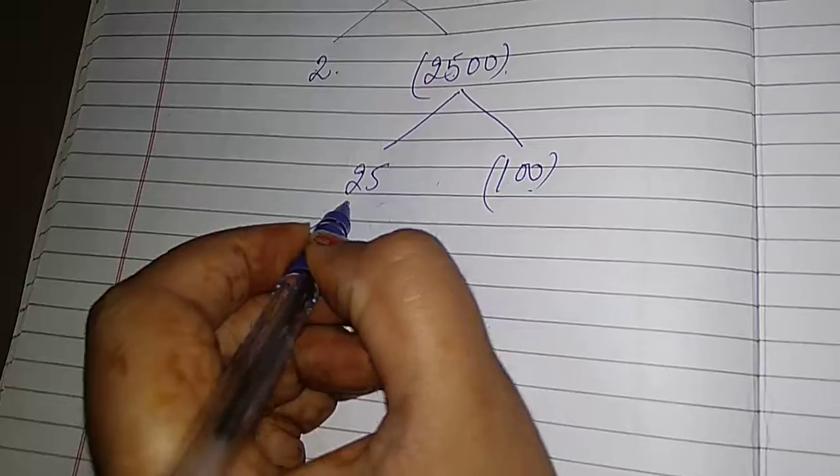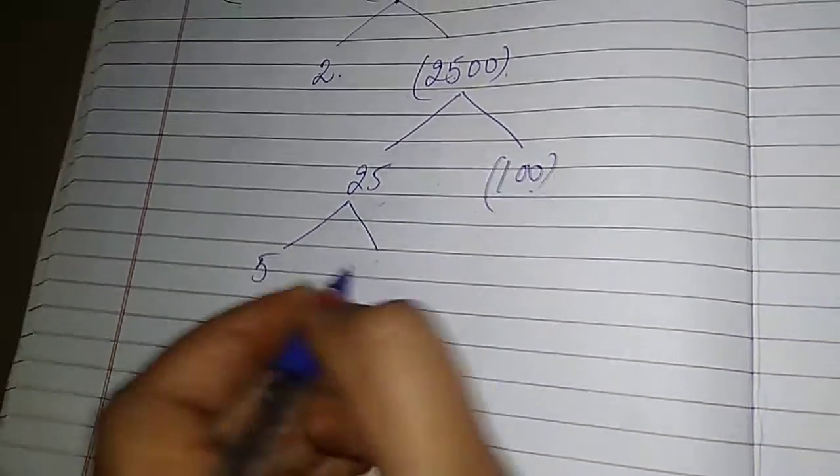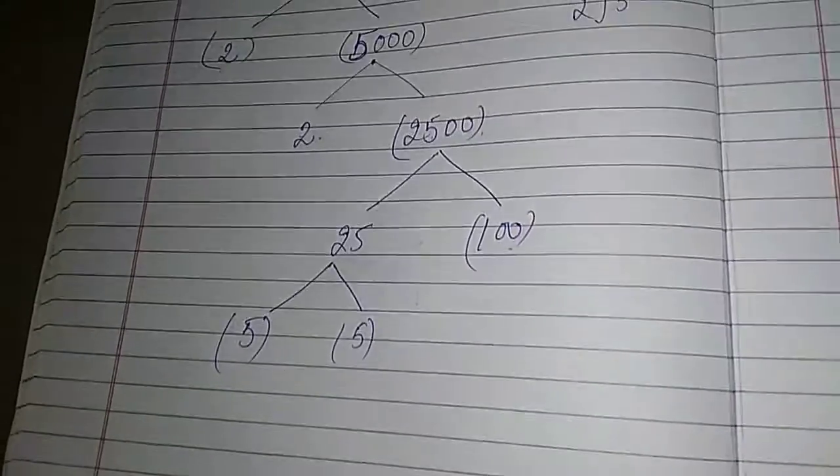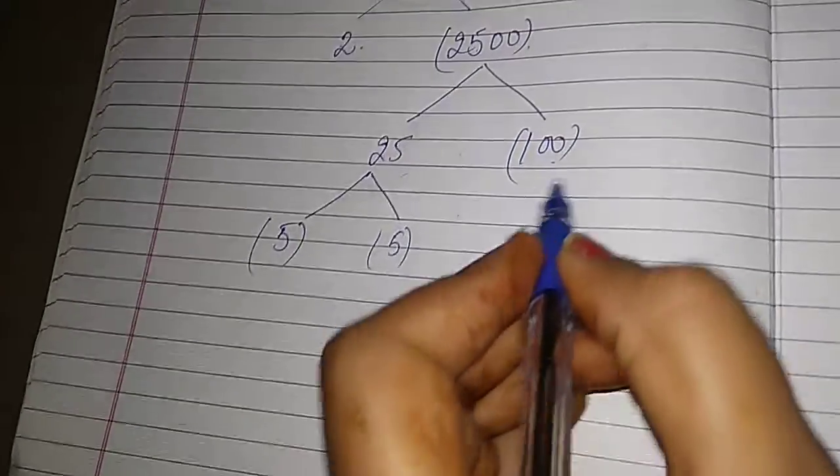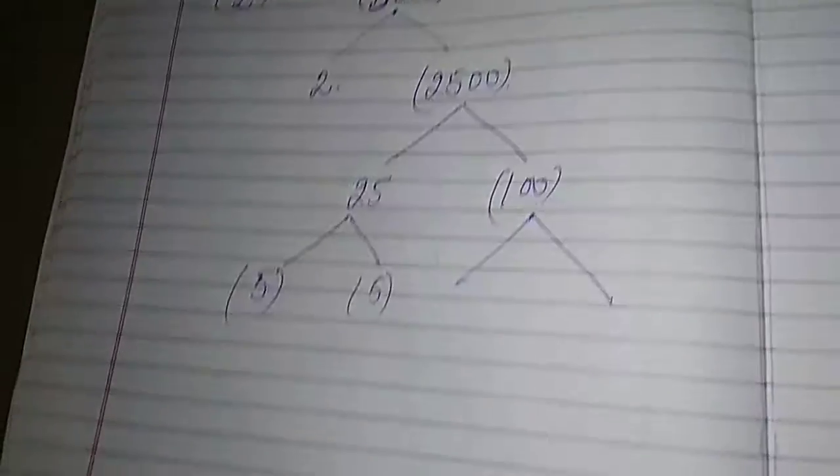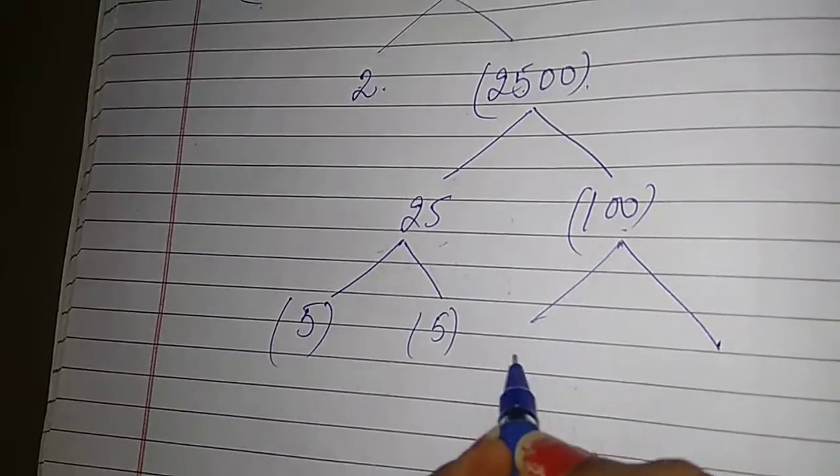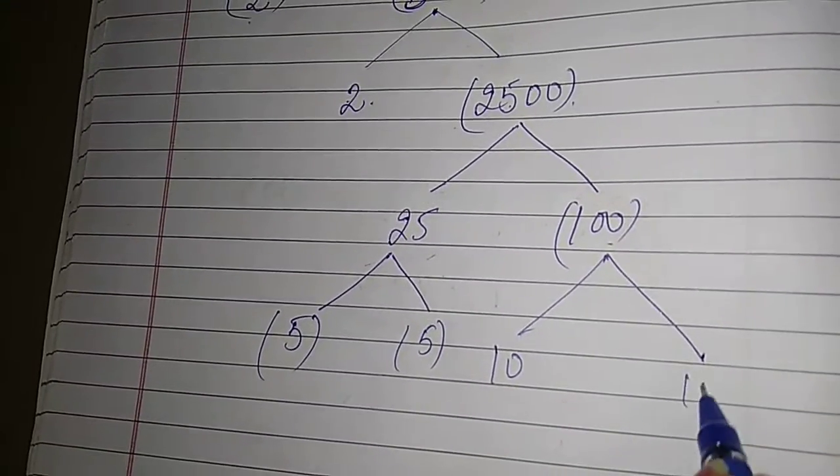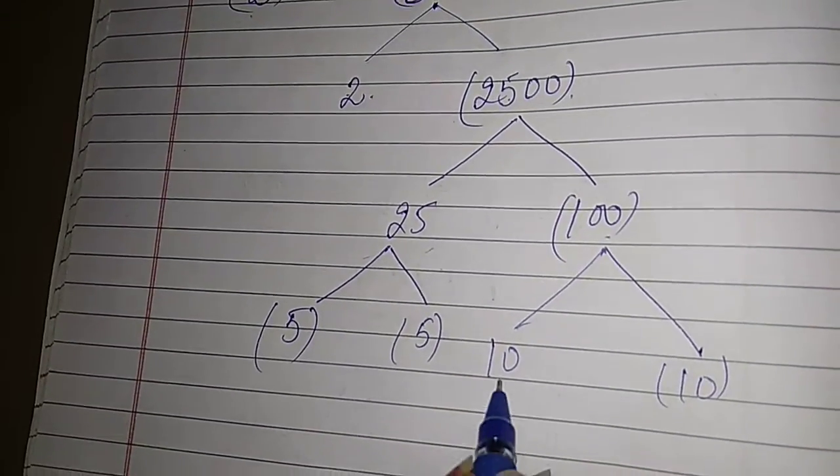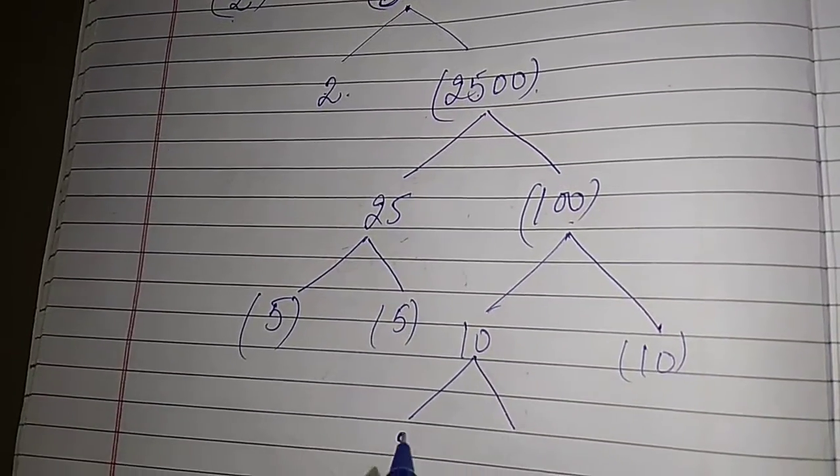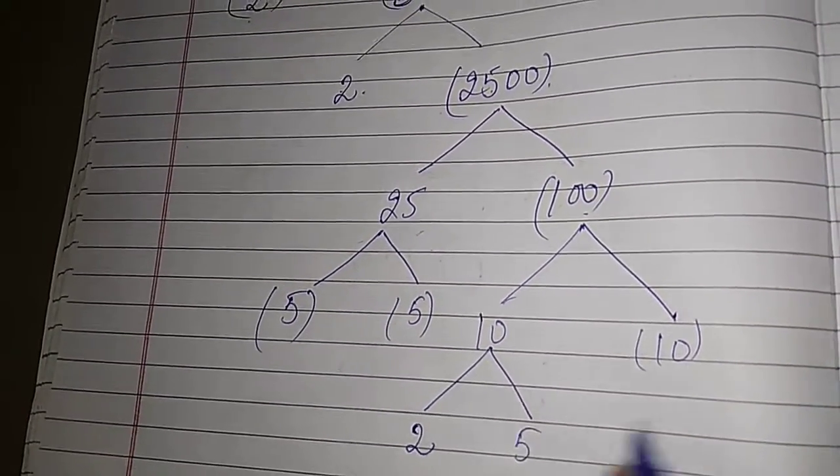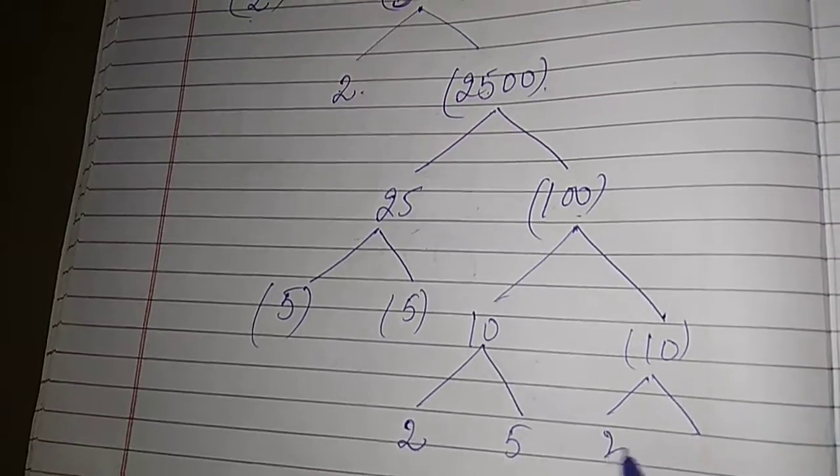This further 25 divided into 5 and 5 because 5 and 5 are prime numbers. This 100 divided to next, that is 10 into 10. And this 10 further again divided into 2 times 5 is 10, 2 times 5 is 10.